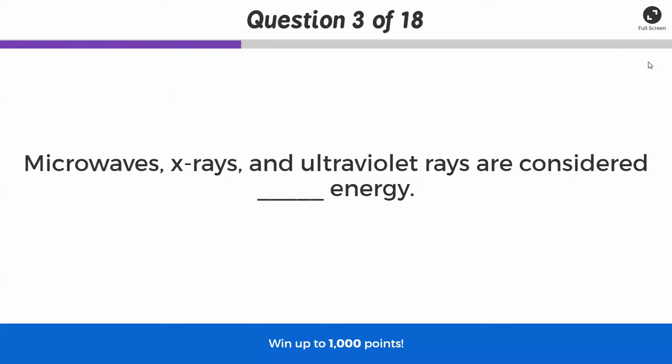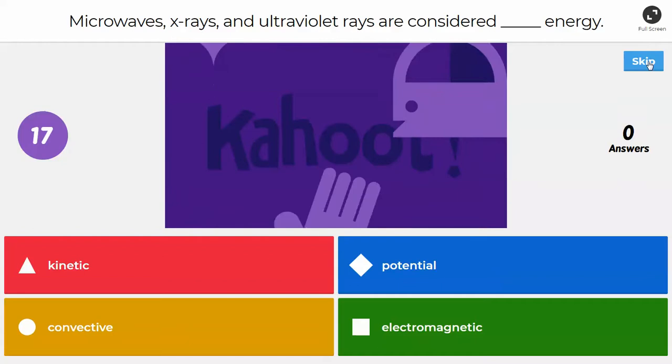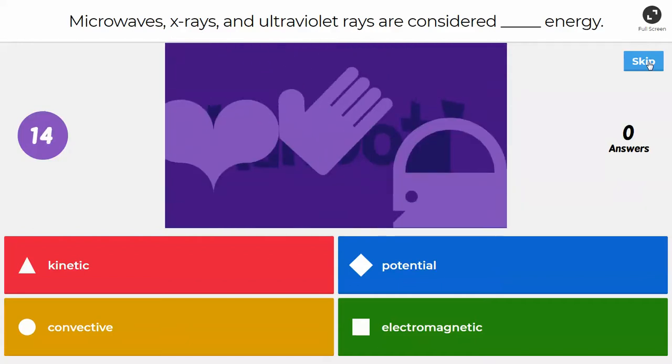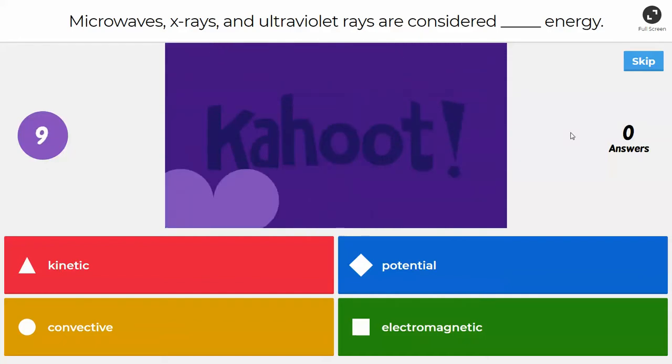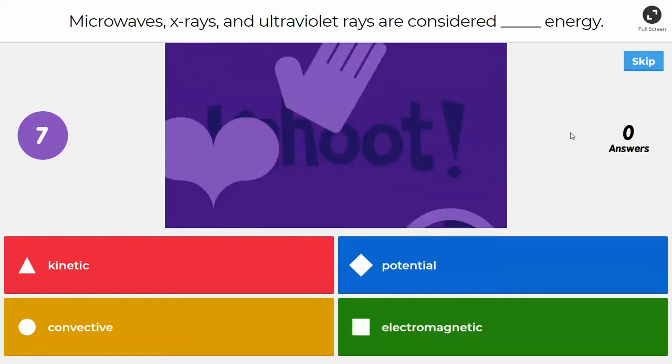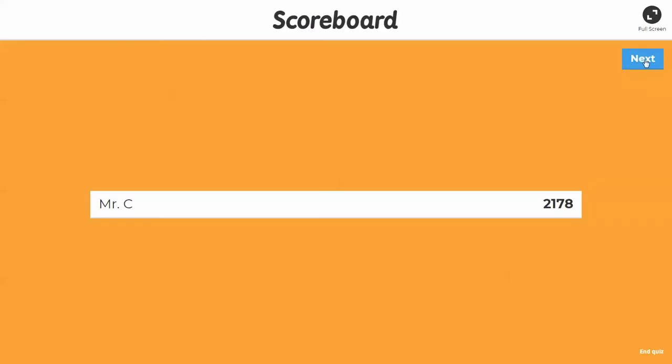Microwaves, x-rays, and ultraviolet rays, what kind of energy are those? Are they kinetic, potential, convective, or electromagnetic? So if you said electromagnetic, that is correct. I know I'm kind of cutting off around 5 seconds or so, but if you ever need more time, I am going to, on the 20-second questions, provide the answer at 5 seconds, and that's just due to time constraints. I want to make sure I get this video in before I have to leave the house.